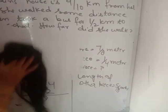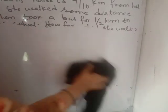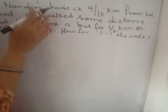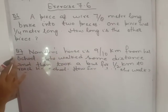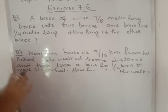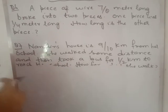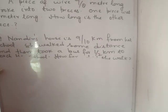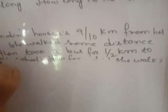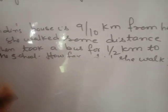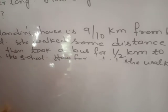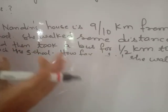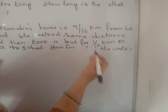Question number 7. Nandini's house is 9/10 km from school. She walked some distance and then took a bus to reach the school. How far did she walk?